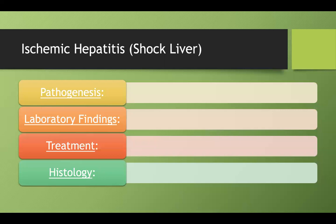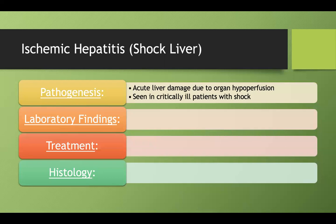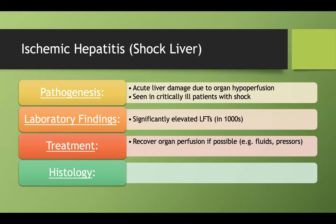Now let's talk about ischemic hepatitis, also known as shock liver — liver damage due to shock and organ hypoperfusion, seen in critically ill patients. You'll have significantly elevated LFTs. Treatment involves recovering perfusion by giving fluids or pressors and treating the underlying cause of shock.